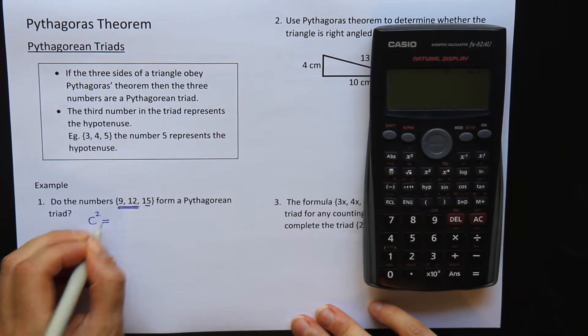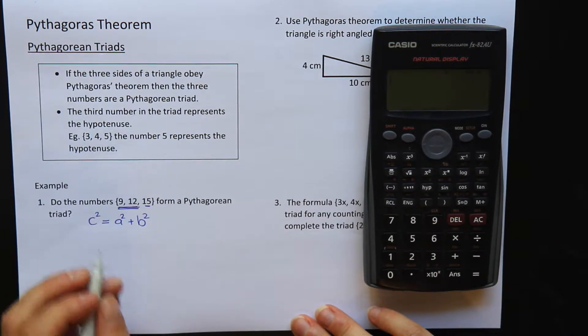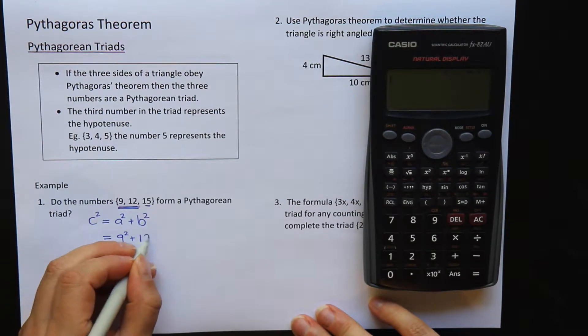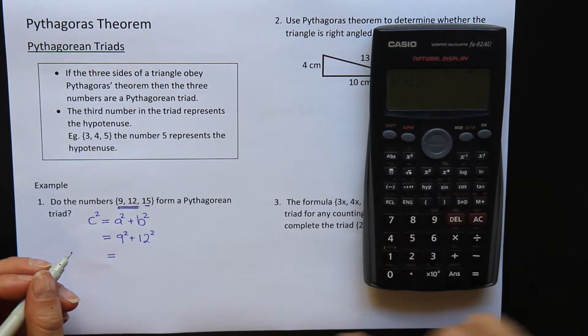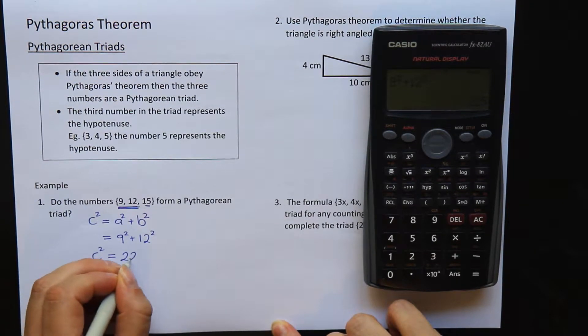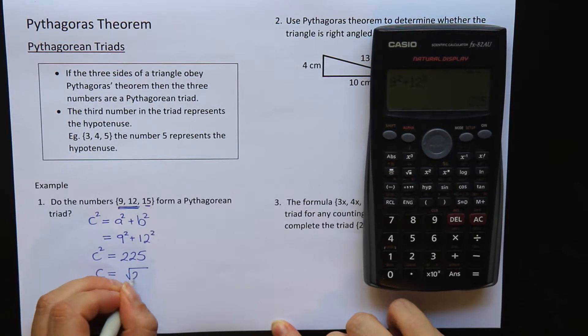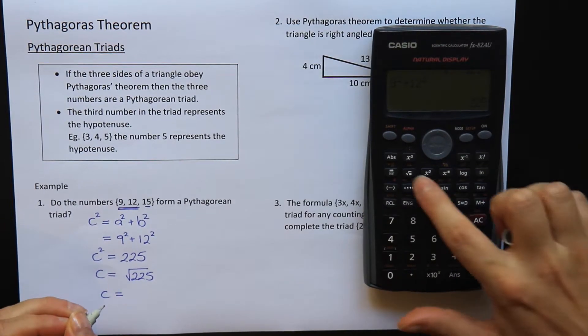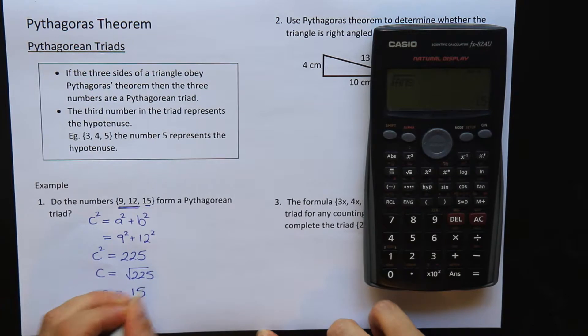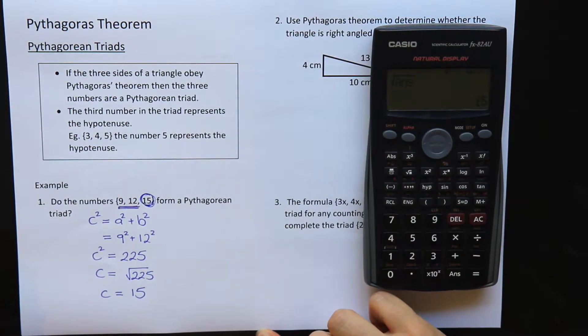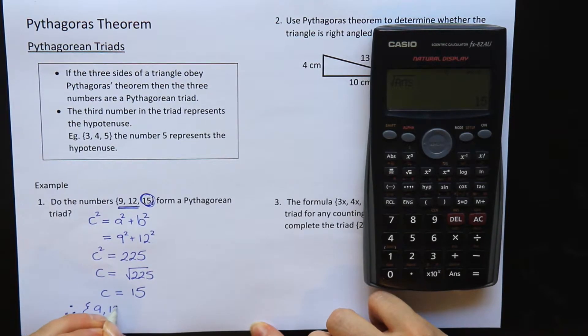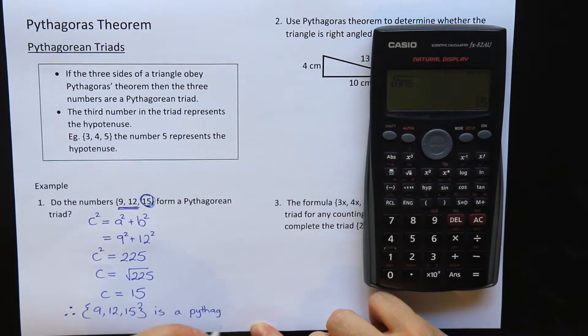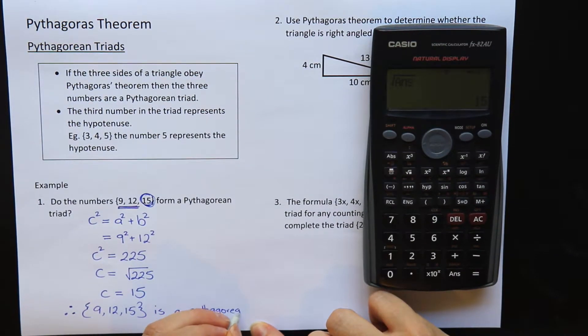So my formula for the hypotenuse: c squared equals a squared plus b squared. Let's use our two shorter sides, 9 squared plus 12 squared, and we'll type that in. 9 squared plus 12 squared equals 225. Okay, we want to get rid of the squared, so we square root the 225, which means what do I get? Oh, 15. Okay, so I got when I did my Pythagoras' Theorem, I got the same number. That means I can write a little conclusion here. Therefore, 9, 12, 15 is a Pythagorean triad.